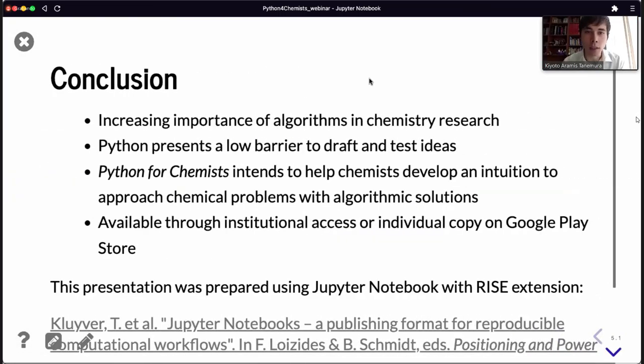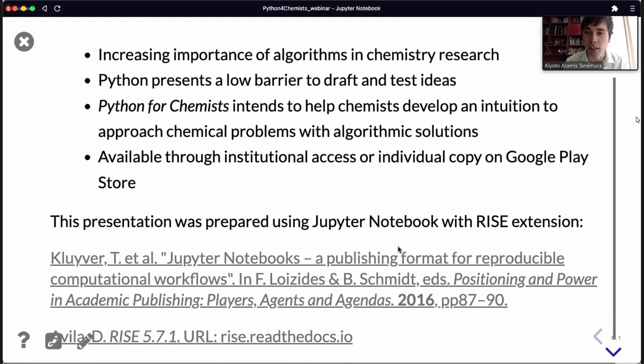Thank you very much, Diego. In conclusion, we discussed the increasing importance of using algorithmic solutions and chemistry research. Python in particular presents a low barrier of entry to begin coding, drafting ideas and testing them. Python for Chemists intends to help chemists develop the intuition to approach chemical problems with algorithmic framing to access even more methodologies. Python for Chemists is available through institutional access or individual copy on the Google Play Store, which Nathan will expand on. We'd like to thank the outstanding production, editing, and marketing team at ACS. This presentation was prepared using Jupyter notebook with the RISE extension for presentation mode. Thank you. I'll hand it to Nathan.